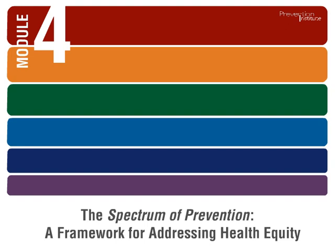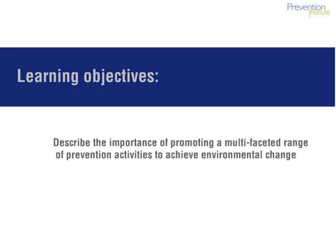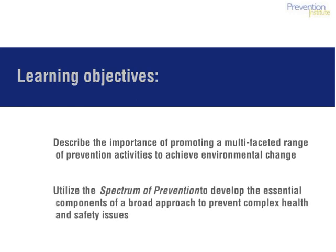Welcome to Module 4. In this module, we will describe the Spectrum of Prevention Framework and explore how it can be used to address health equity. By the end of this module, you will be able to describe the importance of promoting a multi-faceted range of prevention activities to achieve environmental change, and you will be able to utilize the Spectrum of Prevention to develop the essential components of a broad approach to prevent complex health and safety issues.